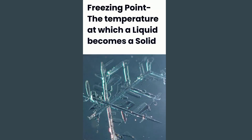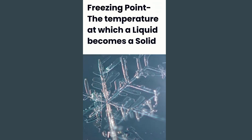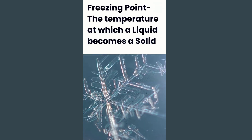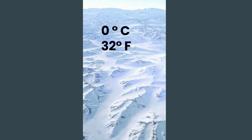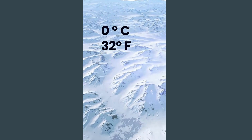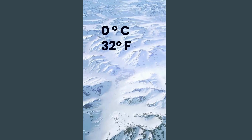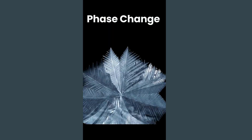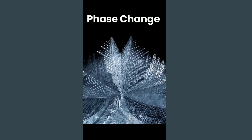Why do these crystals form? They form because the water has reached its freezing point. Freezing point is the temperature at which a liquid becomes a solid. Water freezes at 0 degrees Celsius, 32 degrees Fahrenheit, under normal pressure. When water moves from a liquid to a solid it's called a phase change.